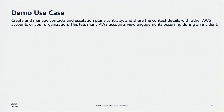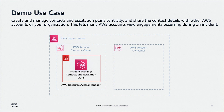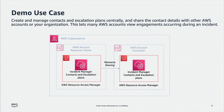In this demo, we're going to use RAM to share Incident Manager resources. Incident Manager is a feature of AWS Systems Manager. It helps you prepare for incidents with automated response plans that bring the right people and information together. Incident Manager contacts are responders to incidents, and escalation plans are escalation paths through your defined contacts. In this demo, we're going to use two AWS accounts under the same AWS organization. First, we'll create Incident Manager contacts and escalation plans in the resource owner account. Then, we'll share the resources with the consumer account, which will allow the consumer account to use shared contacts and escalation plans for responding to an incident.